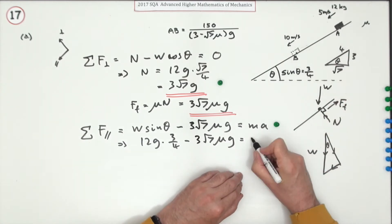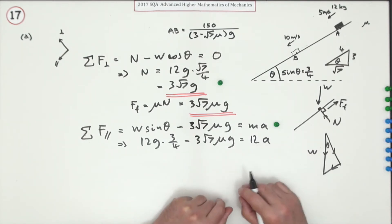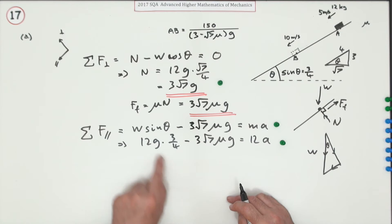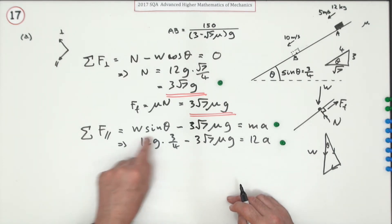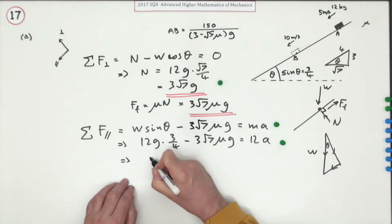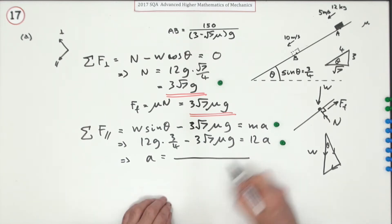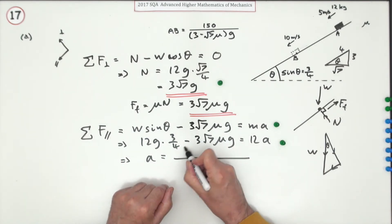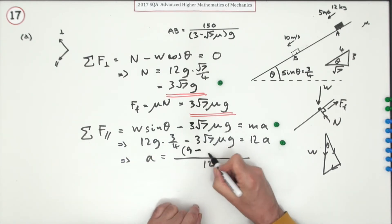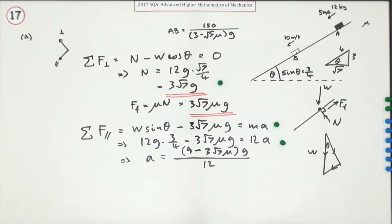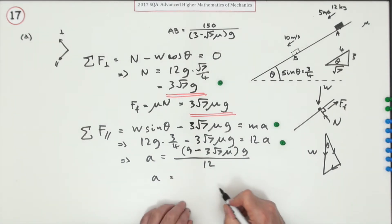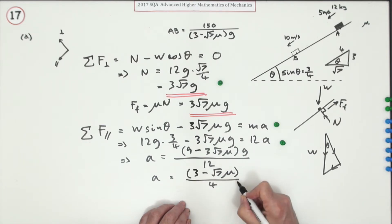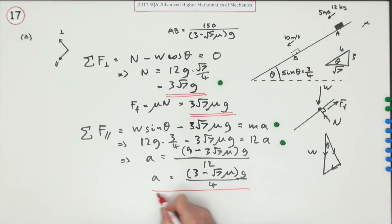Tidying that up — weight component gives 9g, and there's a common factor of 3 — so the acceleration is: a = g(3 − √7 μ) / 4. That expression for acceleration earns the next mark.